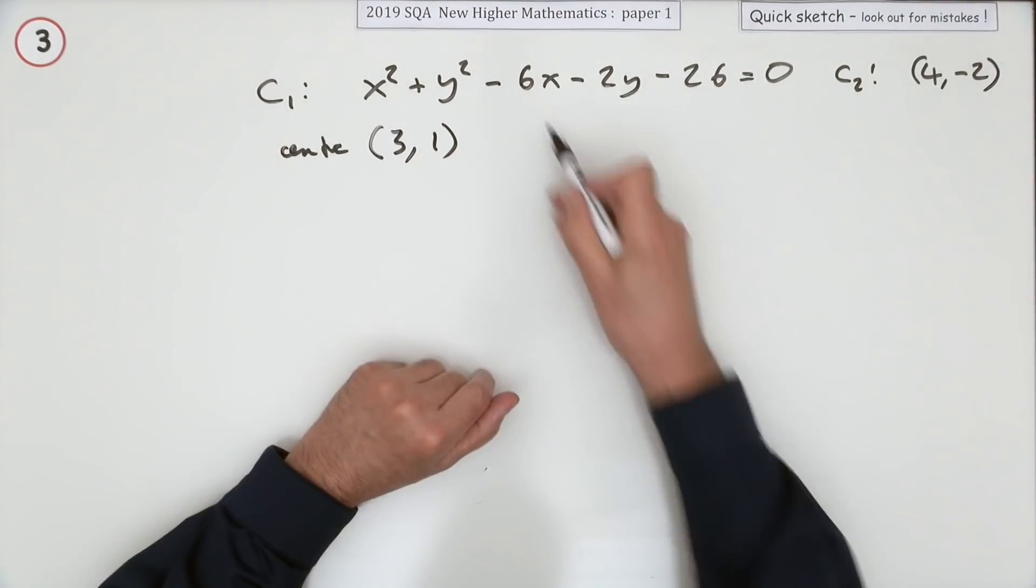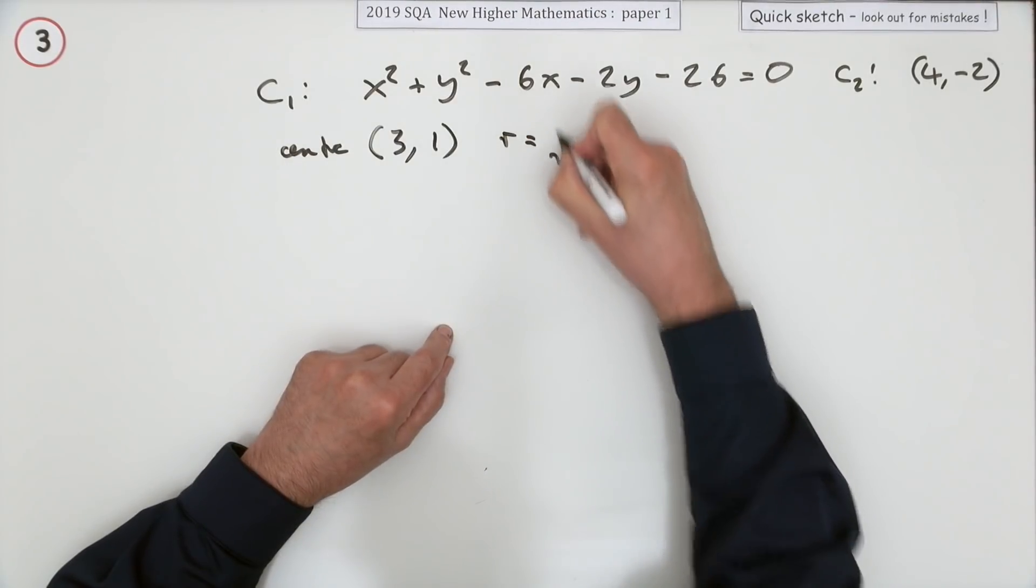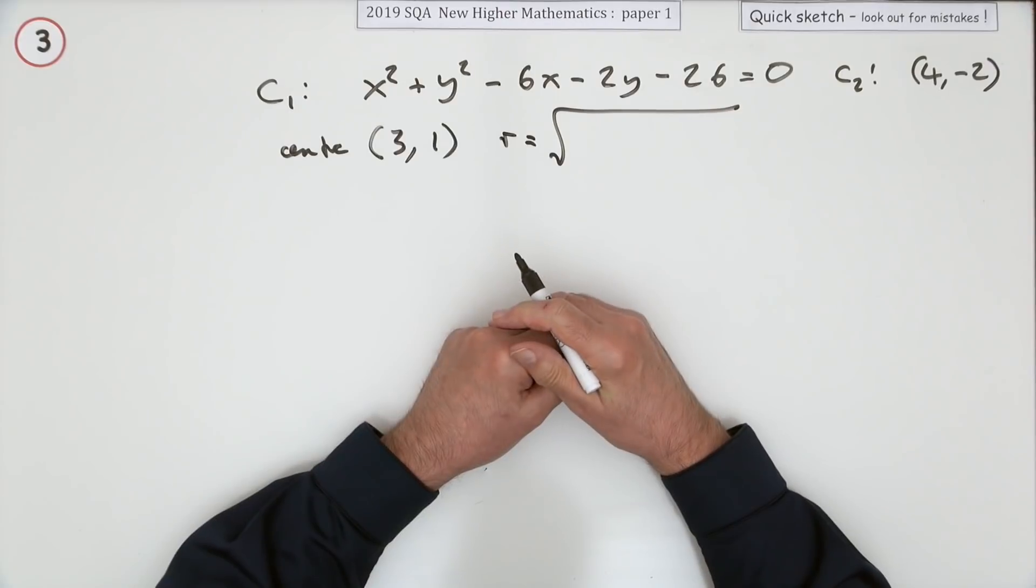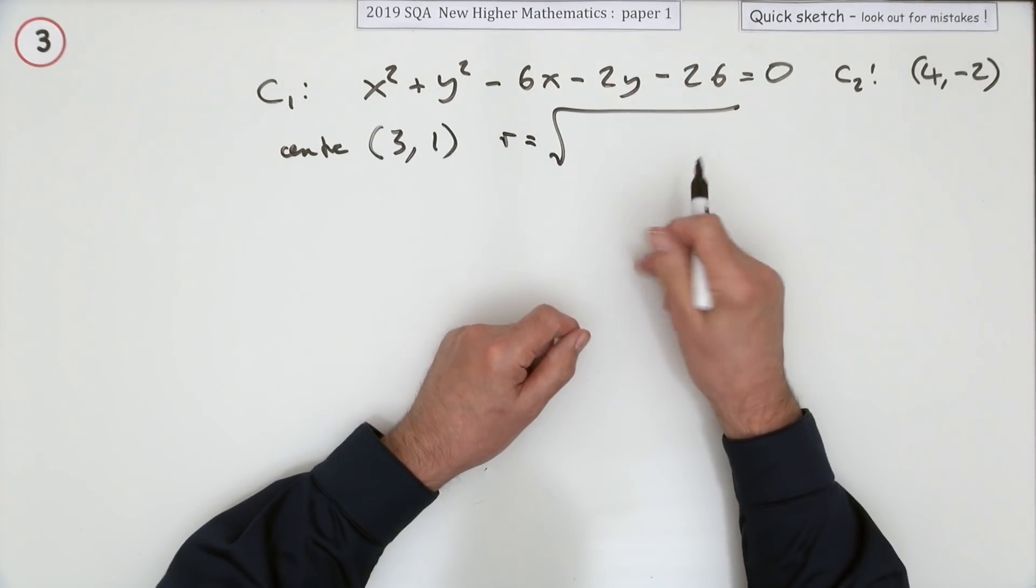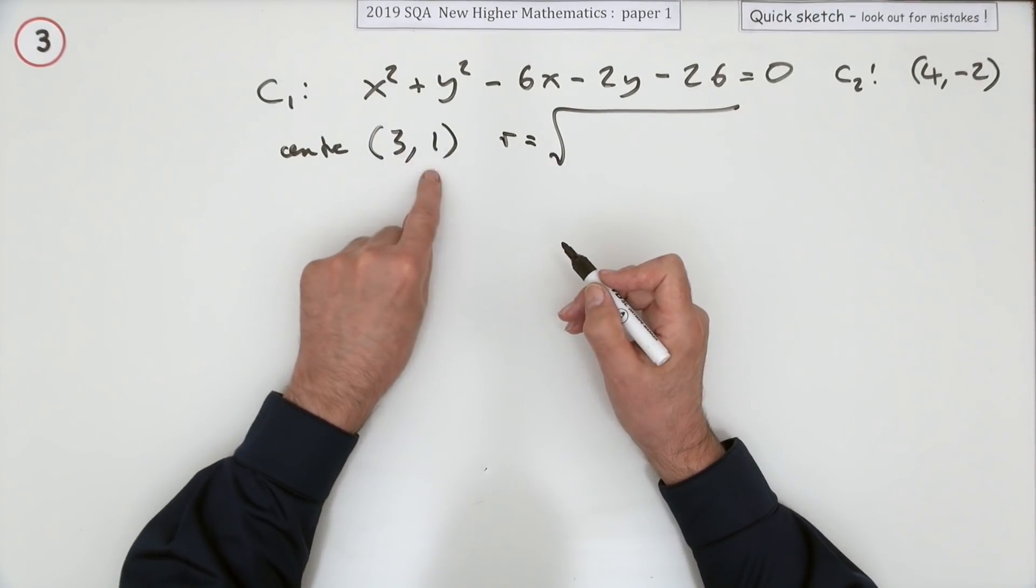When you expanded it you would have got twice the product which had produced that. Which means its radius is found, you can use the formula at the front, but it really just boils down to the centre squared minus the constant at the end. The centre squared, and there's only two marks for the whole question.